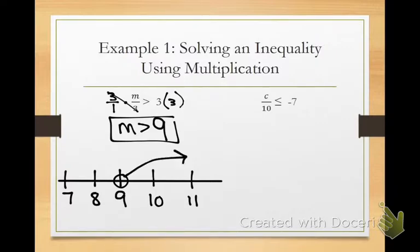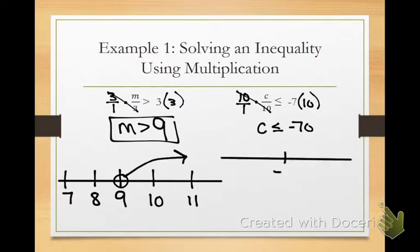So I need to do the same thing on the second inequality. Go ahead and try to come up with your answer and graph your solution. So what did you do to both sides? Multiply both sides by 10. What's negative 7 times 10? Negative 70. Who got C is less than or equal to negative 70? Did I get that right?